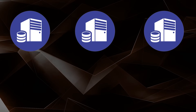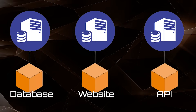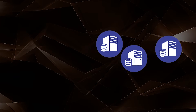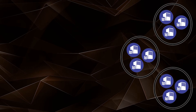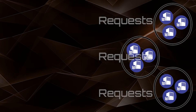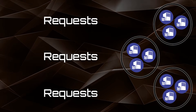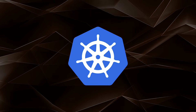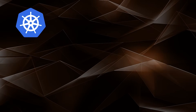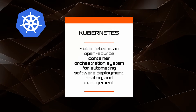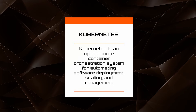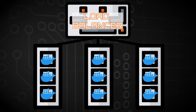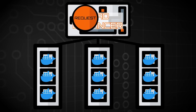Docker containers make it easy for us to separate our applications into multiple microservices that run in their own independent environments with their own set of dependencies. They also make it easy to scale up our services by creating more containers or instances of those containers as necessary. Now, Kubernetes is a container orchestration system for automating software deployment, scaling, and management. Its main purpose is to control the creation and deletion of containers and load balance requests between them.